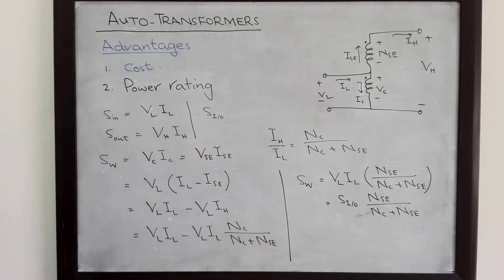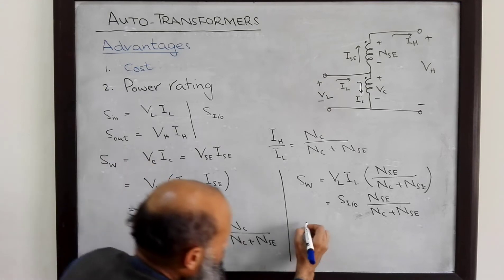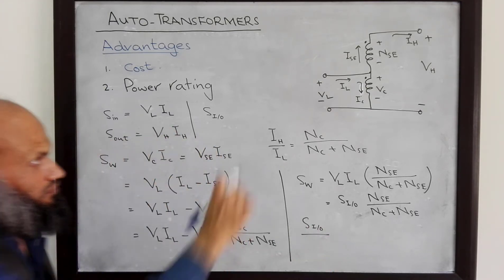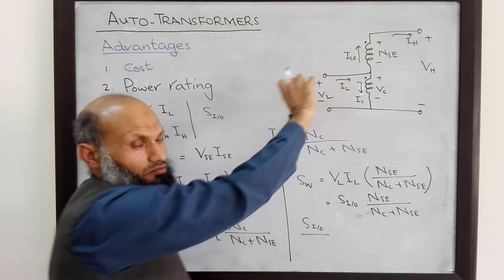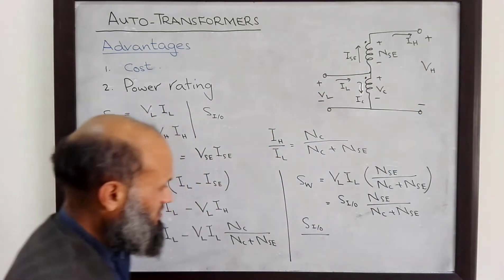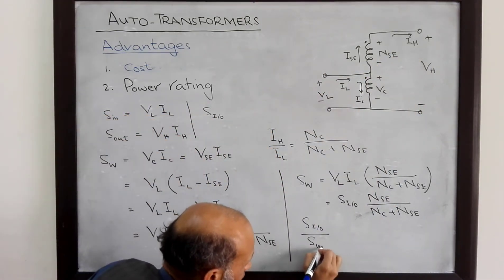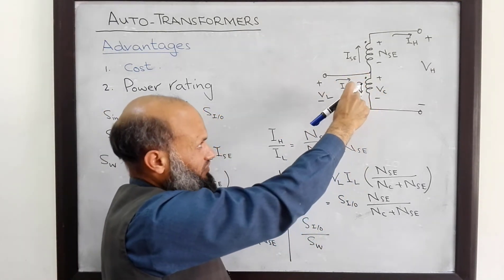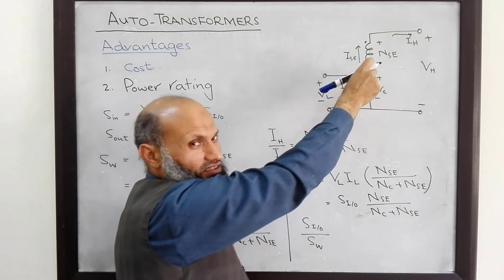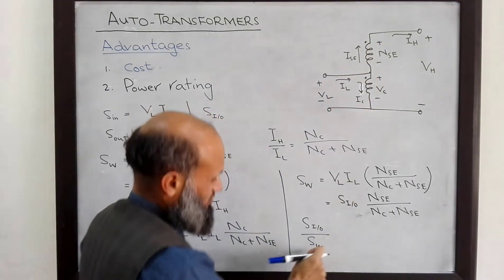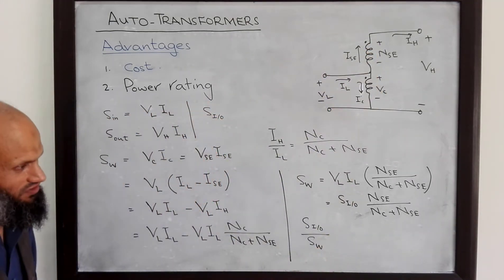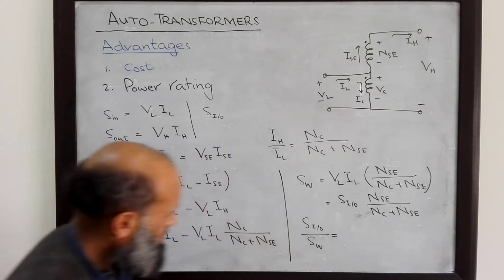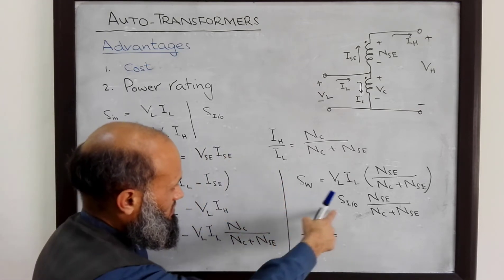Hence, the ratio between the total power flowing from the primary side to the secondary side and the winding power — the power which flows through the magnetic circuit — can be derived. The total power flows through two paths: the magnetic circuit and the electrical connection. S_winding is the power which flows through the magnetic circuit, and this ratio equals Nc over Nse plus 1.